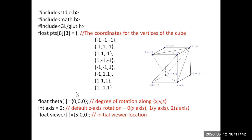Required header files are included. Eight vertex coordinate values for the 3D cube are being initialized. An array variable theta of float type initializes the degree of rotation along x, y, z axis with the value 0. The axis variable of type int is initialized with the value 2, meaning by default rotation is across the z axis. The viewer array variable of float type initializes the viewer position along the x, y, and z axis with the value 0.